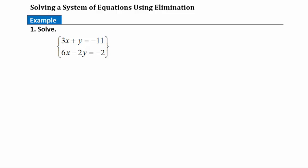When solving a system of equations using elimination, we want either our x variables or our y variables to be exact opposites of one another. If we can manipulate things so that they end up being exact opposites, when we add the two equations together those variables will drop out and allow us to solve the equation.